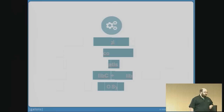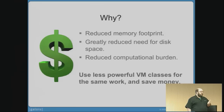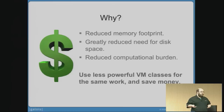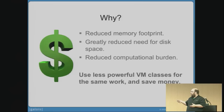Why on earth would we do such a thing? I think there are three big reasons we found at Galois. The first is money. You get a reduced memory footprint, which means you need less memory in the VM you're paying Amazon to get. You get a greatly reduced need for disk space — Linux really likes having a disk, and unikernels make it very easy to just not use a disk because you don't need one. In addition, unikernels frequently give you a reduced computational burden. You don't have a kernel in the way. So you can buy a lower memory and lower CPU EC2 instance, or if you're running on a local Xen cloud, you can use the same hardware to do more by putting more on each individual instance.